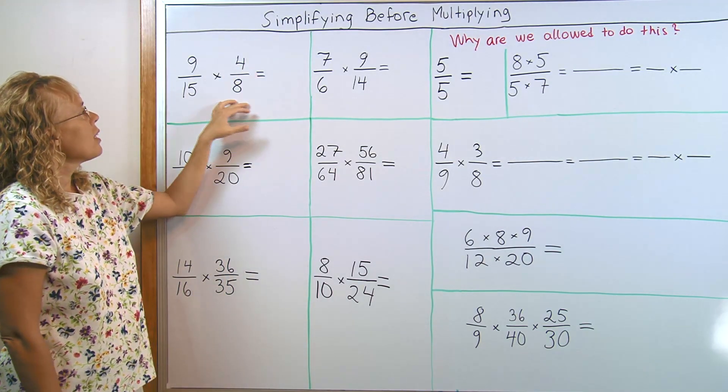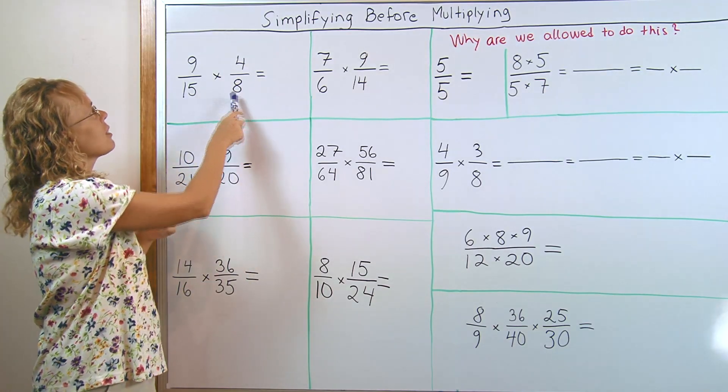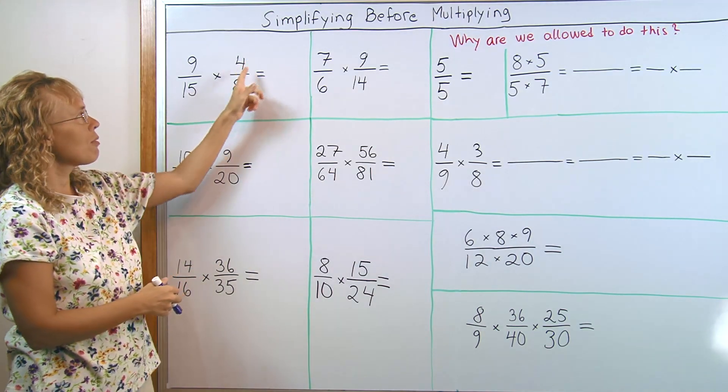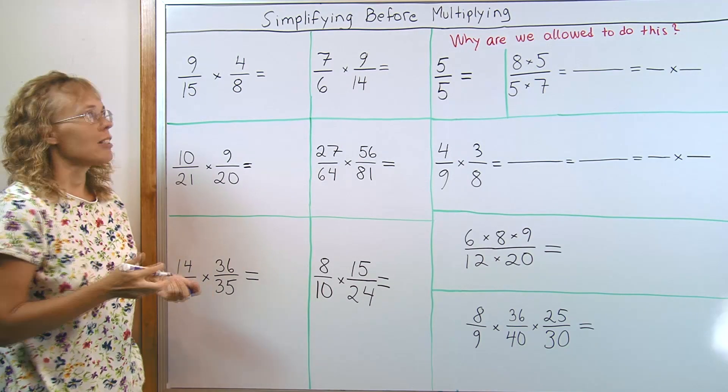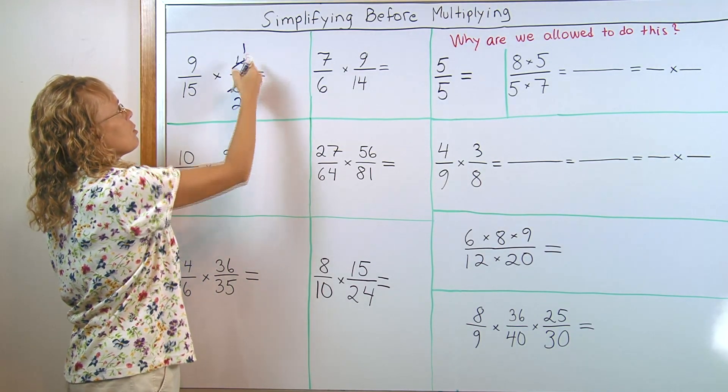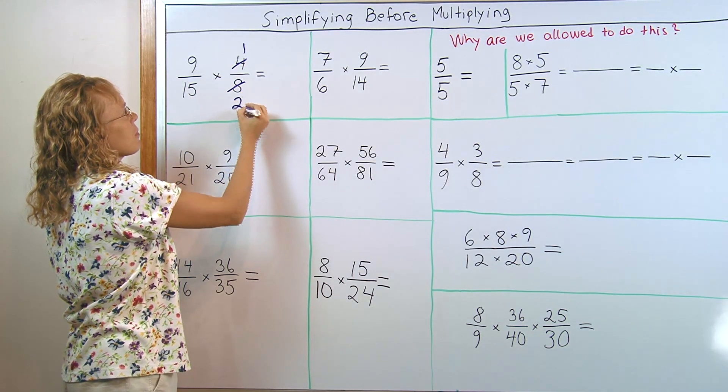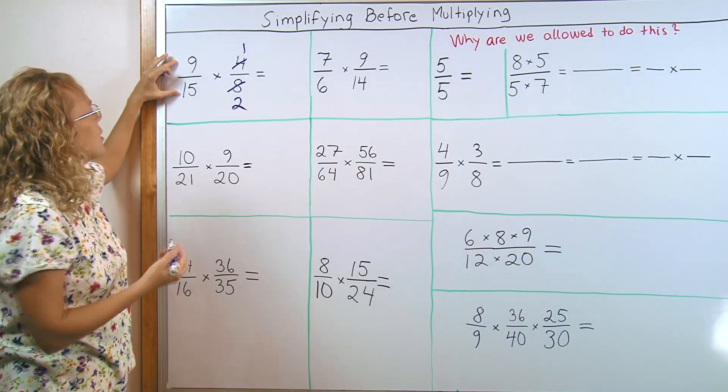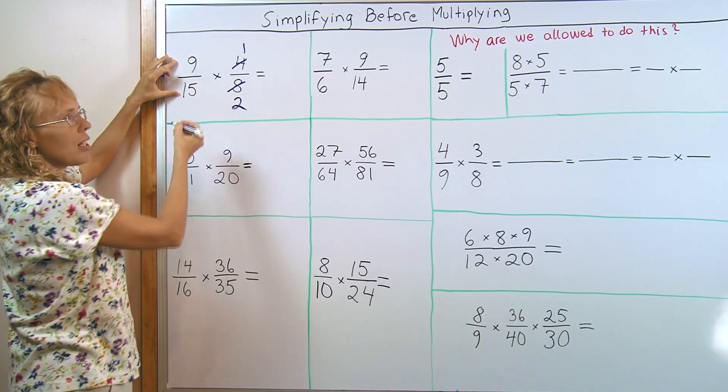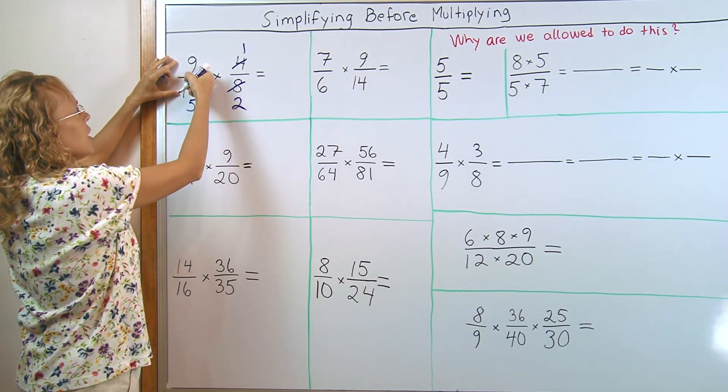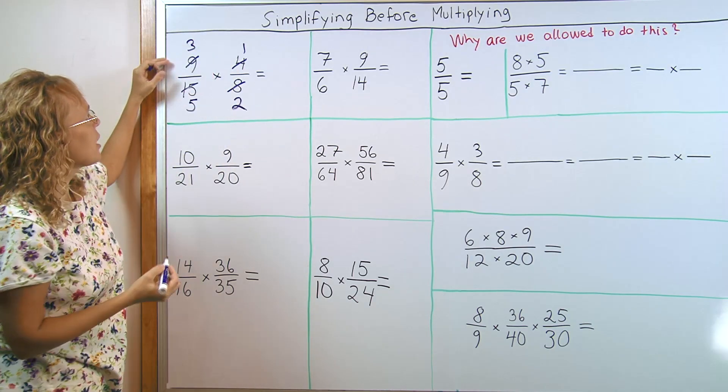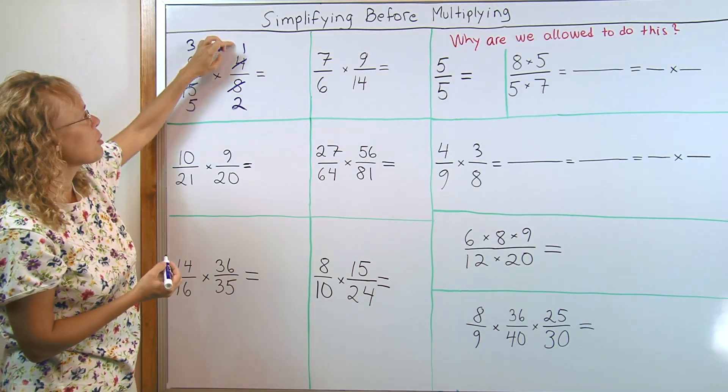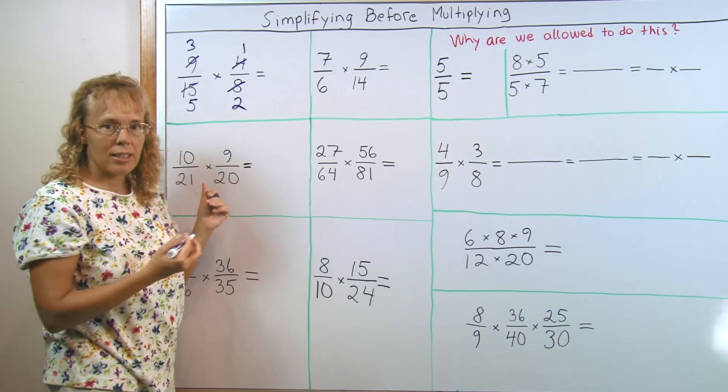For example here, I don't have to multiply 15 times 8, 9 times 4 and then simplify. I can simplify before I multiply. Look, for example, 4 eighths here, it simplifies to 1 half. It is much simpler then to multiply with 1 and 2 instead of 4 and 8. And 9 fifteenths also simplifies, because both are divisible by 3. So I can write here, 15 divided by 3 is 5 and 9 divided by 3 is 3. I could write the fraction 3 fifths in its stead.